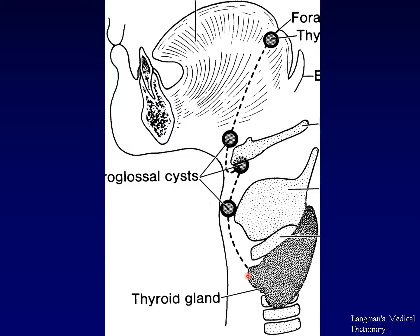Normally, the thyroglossal duct will completely involute. However, if a small amount of the epithelial lining remains, or if a small amount of functioning thyroid tissue gets left along the path, we can develop thyroglossal duct cysts. The hyoid bone forms after the thyroglossal duct and envelops it, so when the hyoid bone rotates up into its adult configuration in a horizontal or transverse plane, it wraps the thyroglossal duct remnant along with it, giving rise to intralaryngeal forms of thyroglossal duct cysts.